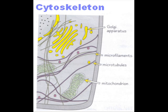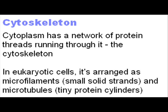The organelles in cells are surrounded by the cytoplasm. The cytoplasm is more than just a solution of chemicals though — it has a network of protein threads running through it. These protein threads are called the cytoskeleton. In eukaryotic cells, the protein threads are arranged as microfilaments — small solid strands — and microtubules, tiny protein cylinders.